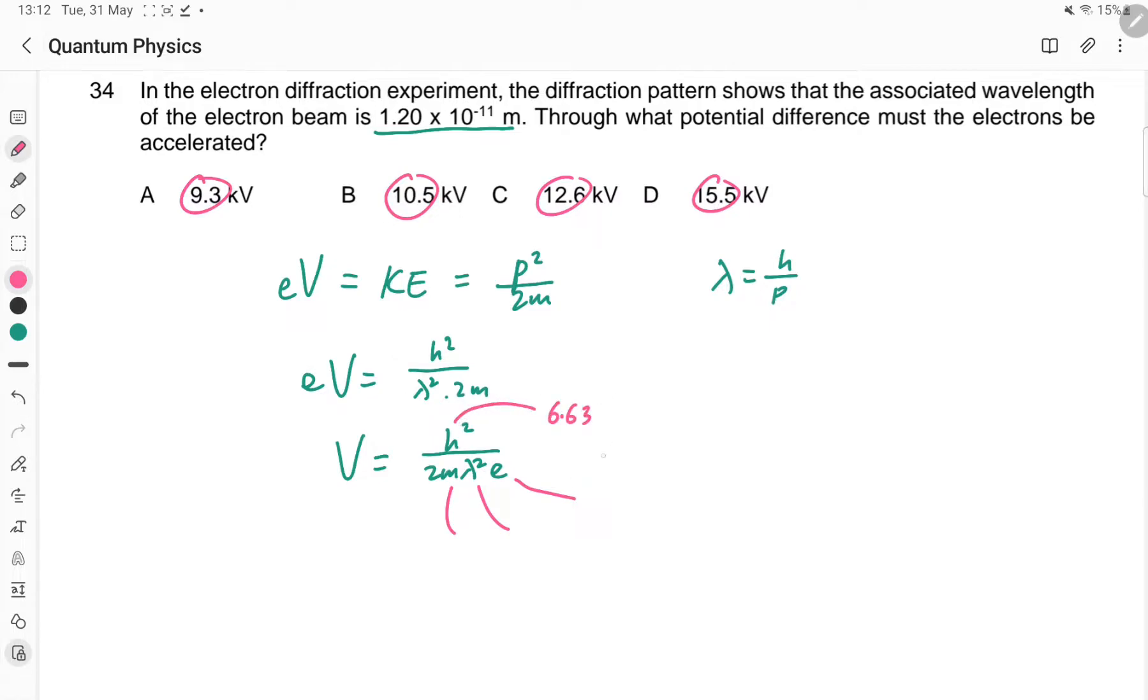So you have 6.63 here. We're going to square that, divide by 2, divide by the mass 9.11, divide by the wavelength 1.2. We've got a square, square, so you still have to do that. And this is the 1.6.